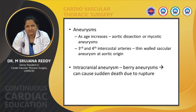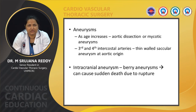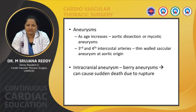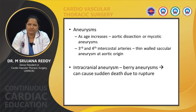There can be aneurysms. As age increases, there is a chance of aortic dissection or mycotic aneurysms. The third and fourth intercostal arteries, which are enlarged due to collateral circulation, can have thin-walled saccular aneurysms at their aortic origin. In association with coarctation of aorta, there can be berry aneurysms which can cause sudden death due to rupture.